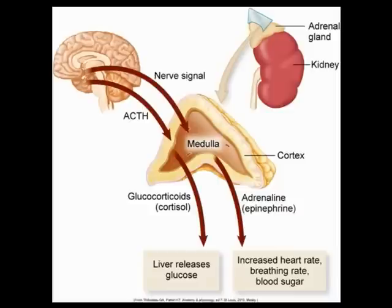Now just imagine if this were to occur for a long period of time. Diabetics have an increase in glucose for a long period of time, and there are all sorts of bad complications from that elevated glucose. The increased heart rate and blood pressure are going to lead to cardiac dysfunction, high blood pressure, and atherosclerotic disease. Increased breathing rate could lead to problems with the lungs, such as air trapping and COPD. So there are lots of long-term complications from having this chronic stress response.